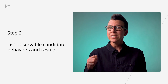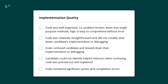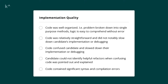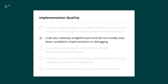Step two: for each competency, list the candidate behavior and results that can be observed. In this example, a five-star scale for assessing implementation quality is turned into a list of radio buttons with specific criteria. If the candidate gets confused about their own code, then the interviewer can see that the code is confusing and select the third radio button. On the other hand, if the code doesn't confuse its author but there are no specific code organizing techniques used, then the interviewer can confidently select the second radio button.